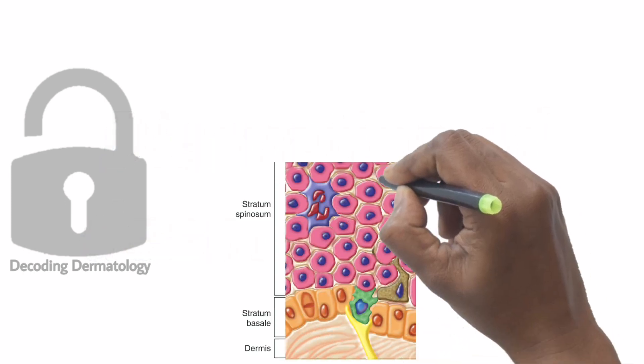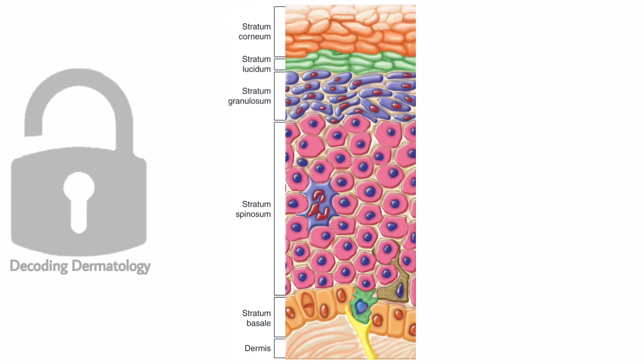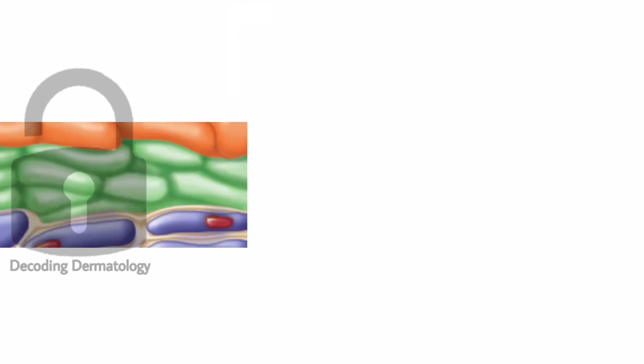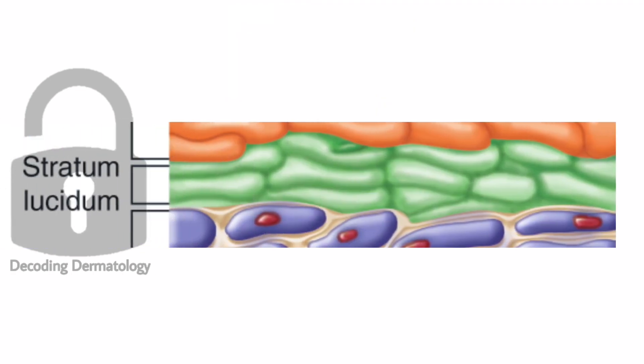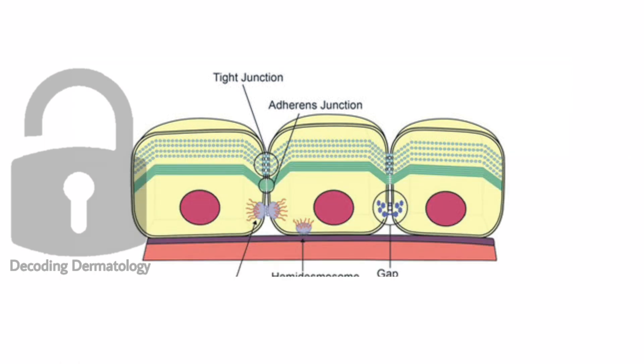Before going to desmosomes, we will see the layers of the skin. In the epidermis, there are layers like stratum basale, stratum spinosum, stratum granulosum, and stratum corneum. Stratum lucidum is present only in palms and soles. The cells in the epidermis are glued to each other with the help of desmosomes.